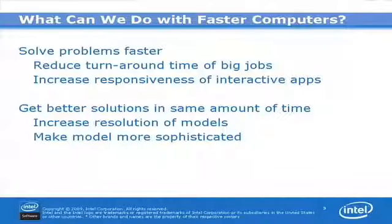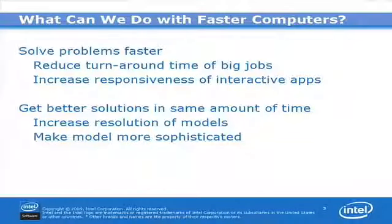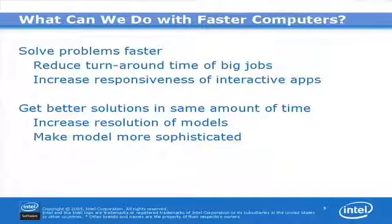The second thing you can do is to get better solutions in the same amount of time. You may have a dataset that is too large to fit on current technology. With a faster computer, you could run that larger model in the same amount of time. This allows you to increase the resolution of models — say for weather prediction — and also make your model more sophisticated, adding more processing, more physics, and more things to the model.